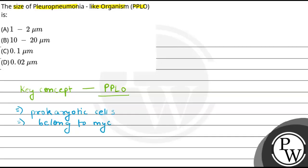We know that they are the smallest cells. And that is the reason, if we get PPLO, then they will be very small. And they are so small that they multiply very quickly as compared to eukaryotic cells.